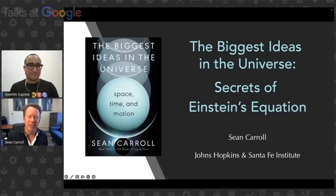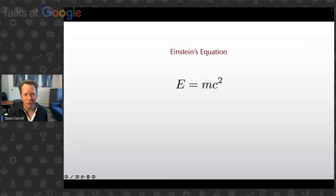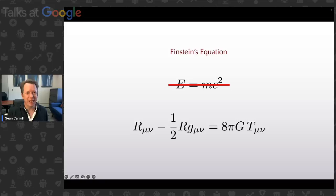Coming from this book I recently published, The Biggest Ideas in the Universe, there are too many big ideas. The book is about all sorts of ideas in classical physics. So I picked one for this talk — the biggest idea I could put my finger on — which was Einstein's equation. Now, depending on your physics background, you probably think you've heard of Einstein's equation. E equals mc squared is extremely famous, maybe the most famous equation in physics. But this is not what professional physicists refer to as Einstein's equation.